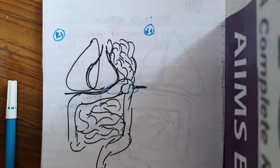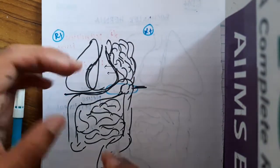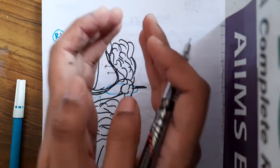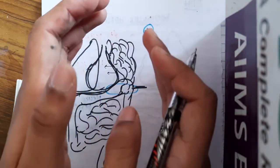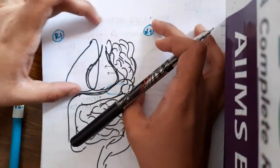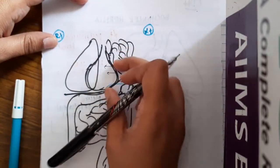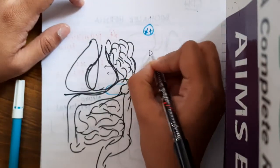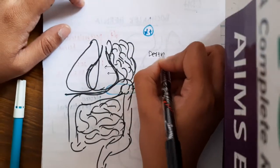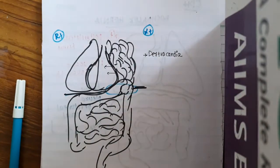These bowel loops also push the heart to the right side. The stomach, spleen, and transverse colon all herniate into the thorax from the abdomen, and these will push the heart to the right side, causing the heart to be present on the right side. The condition where the heart is present on the right side is called dextrocardia.